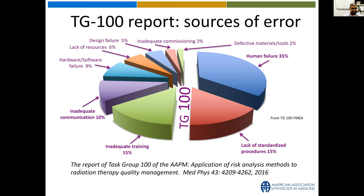When TG100 analyzed the IMRT treatment process, they found that only about 9% of errors were due to hardware and software. Non-process errors were roughly 25%, leaving the other 75% of possible error pathways due to process. We've gotten really good at prescriptive device-centric QA over the years, but a new prospective risk-based analysis would help make sure the other 75% of possible errors are covered.